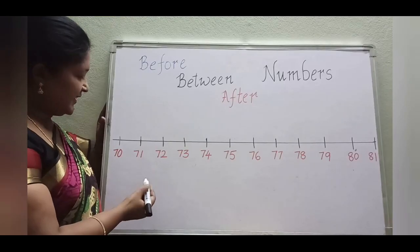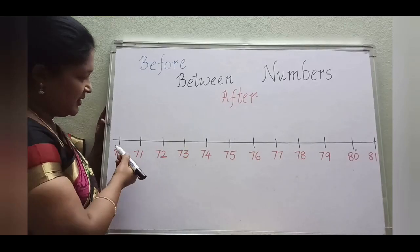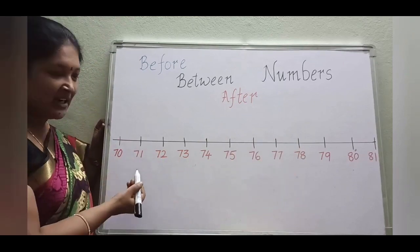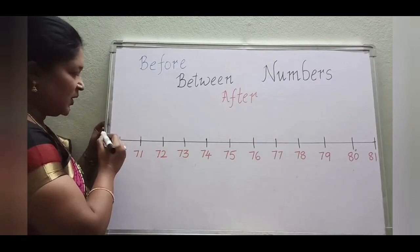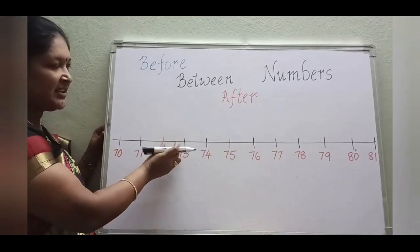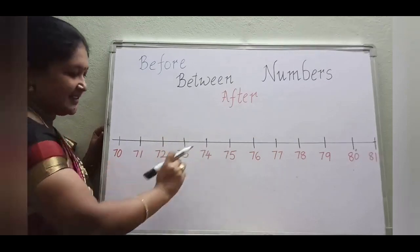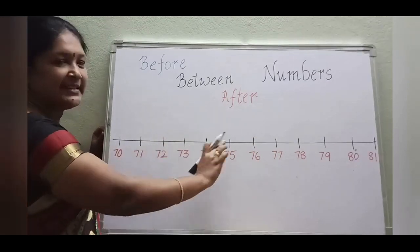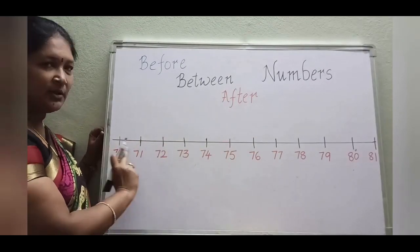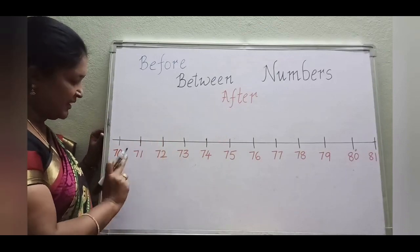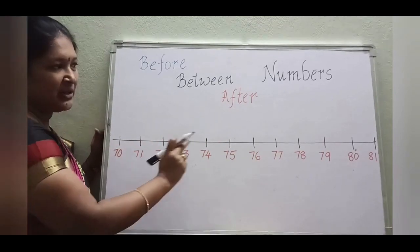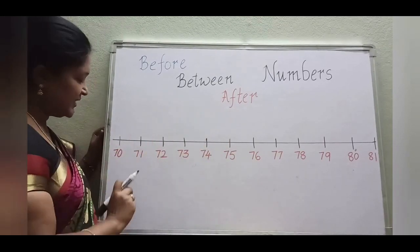Ok children, what is this? It is a number line. On a straight line, some numbers are there with equal distance, so this is called a number line. And some numbers are there on the number line. What are those? From 70 onwards the numbers are there.